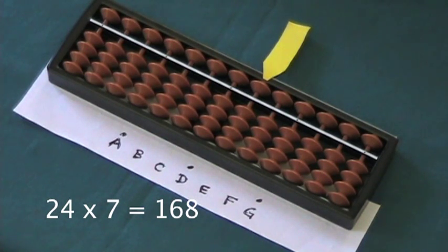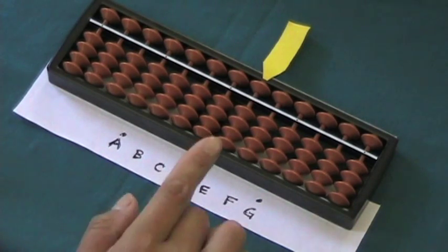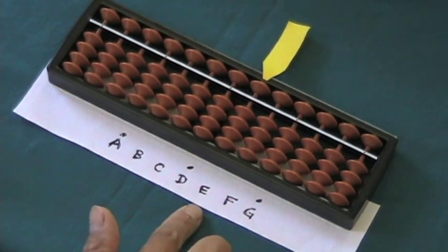In this case 24 is the multiplicand, 7 is the multiplier, and we're going to find the product is 168, which this time we probably wouldn't have memorized. We've shown a unit rod as rod E here with our yellow post-it.